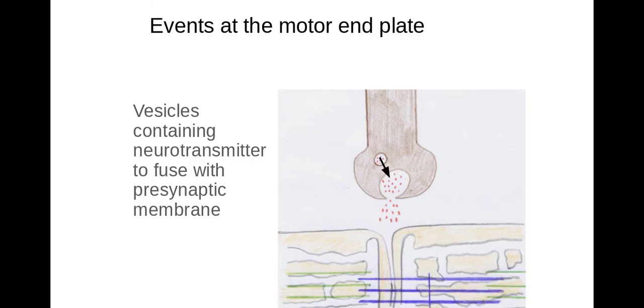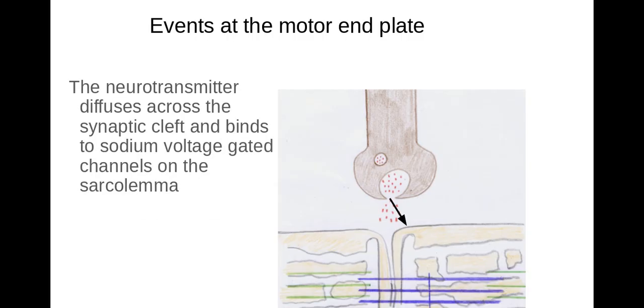So it's the role of the cytoskeleton that causes these vesicles to move within the presynaptic knob towards that presynaptic membrane. And once the vesicles reach that presynaptic membrane, the neurotransmitter will then diffuse across the synaptic cleft.